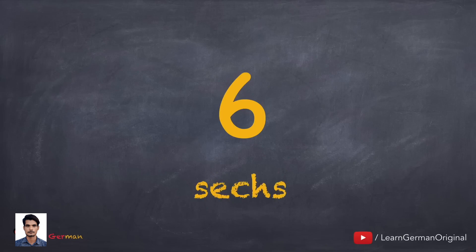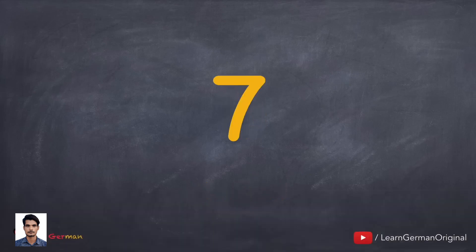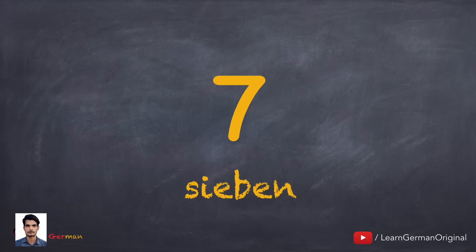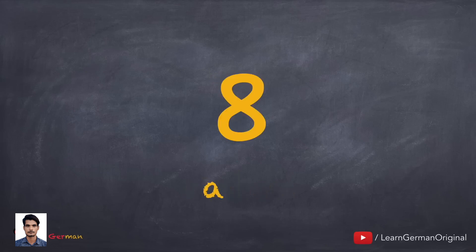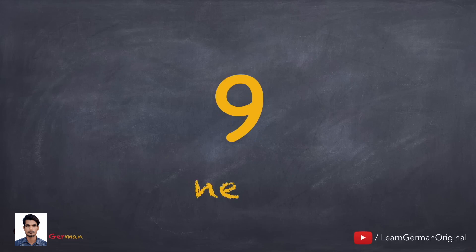Sechs. We have already learned that whenever the letter S occurs at the beginning of a German word and is followed by a vowel, it is pronounced as if it were the English Z. Similarly, the next one: Sieben. Acht.